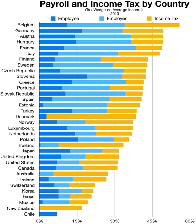The first income tax is generally attributed to Egypt. In the early days of the Roman Republic, public taxes consisted of modest assessments on owned wealth and property. The tax rate under normal circumstances was 1% and sometimes would climb as high as 3% in situations such as war. These modest taxes were levied against land, homes and other real estate, slaves, animals, personal items and monetary wealth.